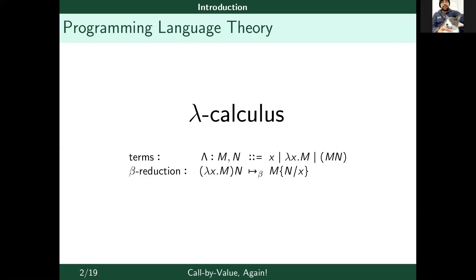We can consider terms of Lambda Calculus as programs. We have a rewriting of terms called reduction, and we can see it as a step in the program. Some terms reach final forms which can't be reduced anymore — those are called normal forms — and we can see those normal forms as results of programs.